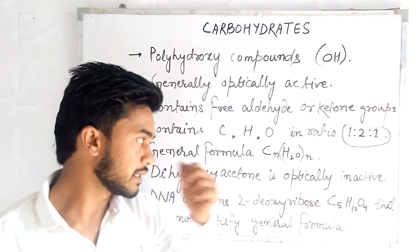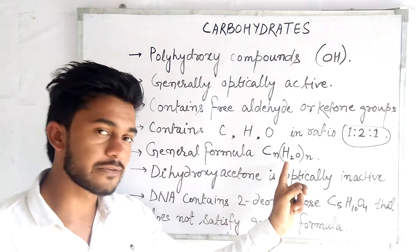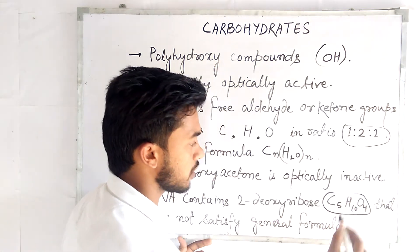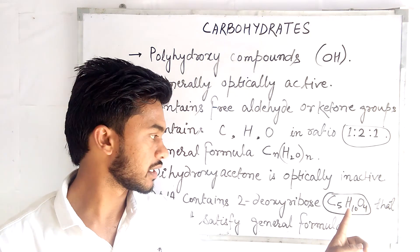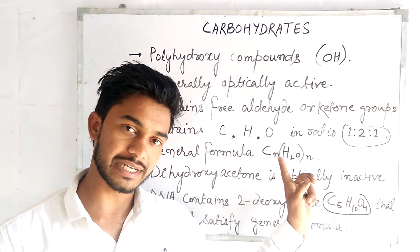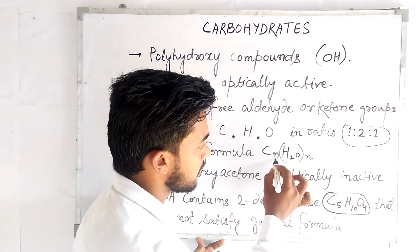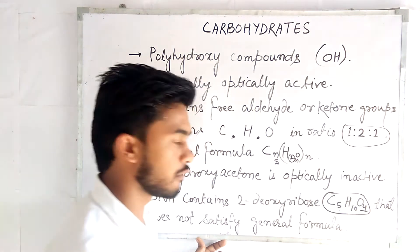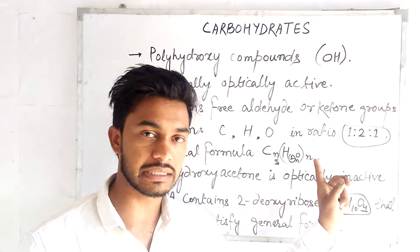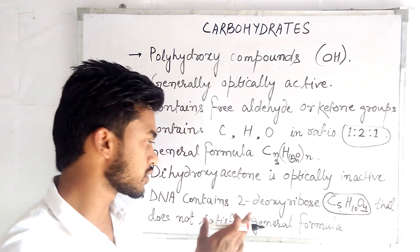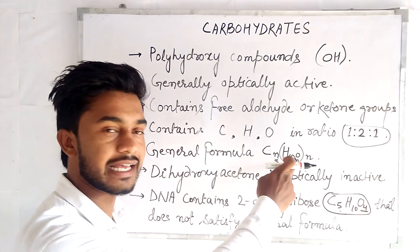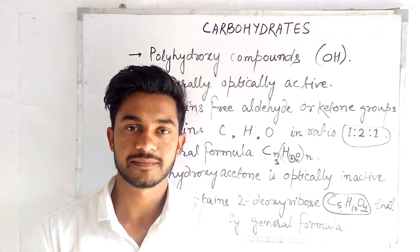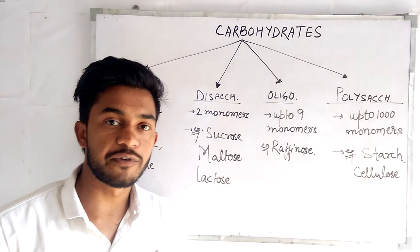An exception to this general formula is 2-deoxyribose sugar. The formula of 2-deoxyribose sugar is C5H10O4. This does not satisfy the general formula CₙH₂ₙOₙ, because with 5 carbons you would expect 10 hydrogens and 5 oxygens, but 2-deoxyribose has only 4 oxygens.